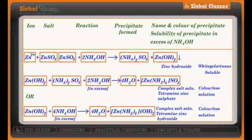Tetra amine copper sulfate was dark blue — inky blue in color — whereas tetra amine zinc sulfate is a colorless solution. You can also take only the precipitate of zinc hydroxide and add excess ammonium hydroxide; you will again get a colorless solution, but this time it forms tetra amine zinc hydroxide — a colorless solution, not a precipitate.